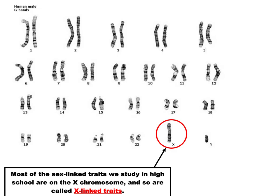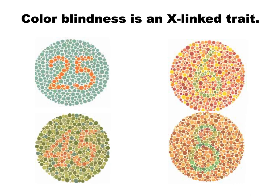Colorblindness is an X-linked trait that appears more often in boys because they have only one chance to avoid it. The colorblind allele is recessive little-b; normal vision is dominant big-B. Mom could be a carrier — having the colorblindness gene on one X but not expressing it. Dad gives a Y to boys. So if mom passes that colorblind X to a son, he's colorblind — he got it from mom. Girls have two chances to avoid it: both X chromosomes would need the recessive allele for a girl to be colorblind.